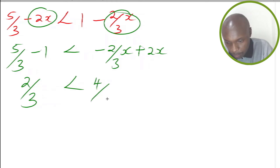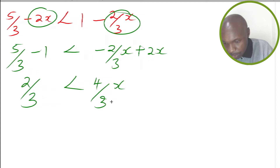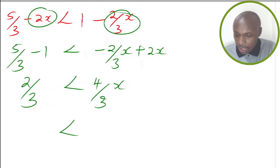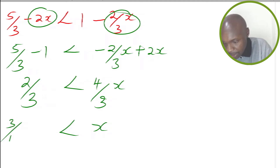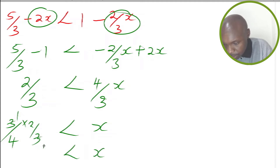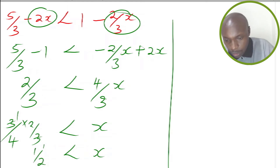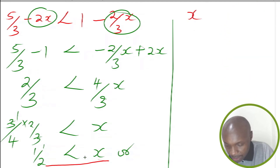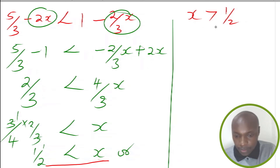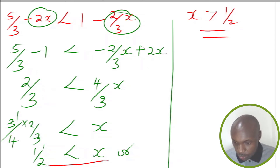Negative 2/3 x plus x gives 4/3 x. So we have 2/3 less than 4/3 x. To solve for x, multiply both sides by the reciprocal of 4/3, which is 3/4. So 3/4 times 2/3 gives 1/2. Therefore x is greater than 1/2. That is the solution for the first inequality.